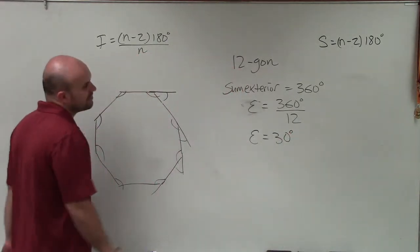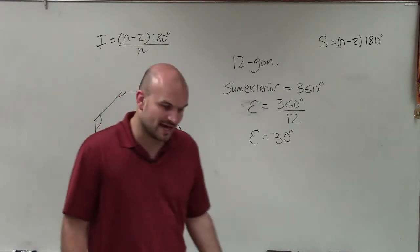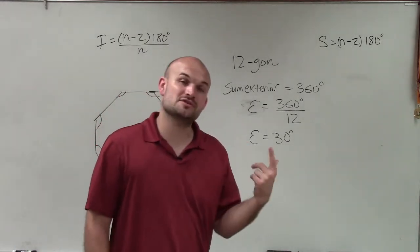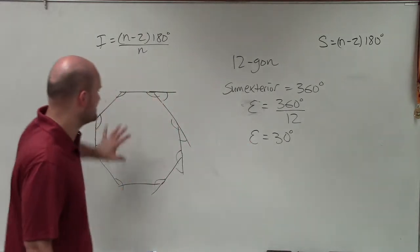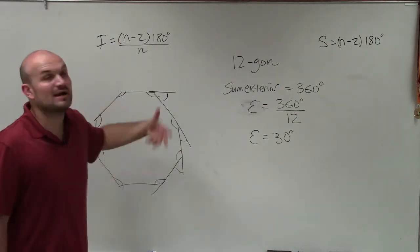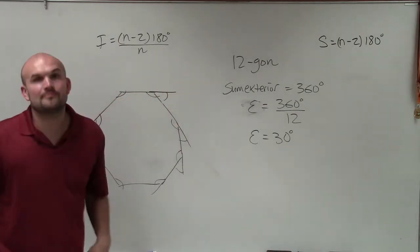So therefore, the measure of one exterior angle of a 12-gon is going to be 30 degrees. And this is an octagon, just something I used to help express my thoughts. Not really part of that problem. Thanks.